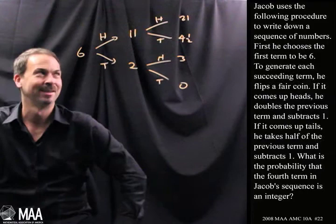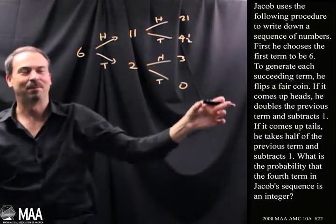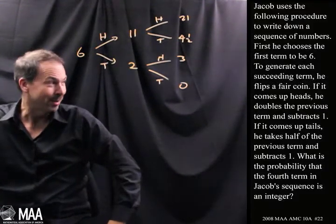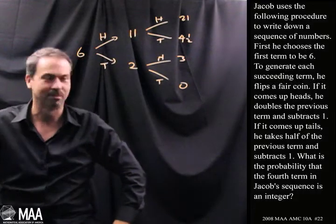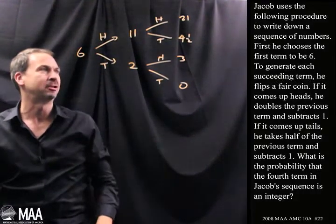Oh, I only have to go one more step. I can do that. In fact, you can do it too. Why don't you go one more step and see the possibilities of what Jacob's fourth number could be. And then maybe we can actually answer the question, which was, because I've forgotten the question already, what is the probability that the fourth term in Jacob's sequence is an integer?